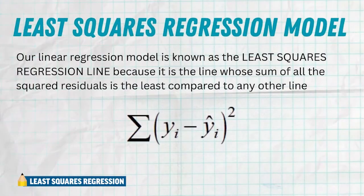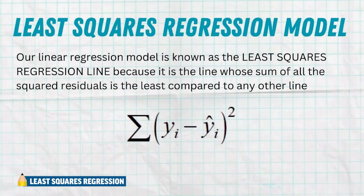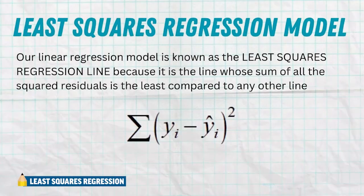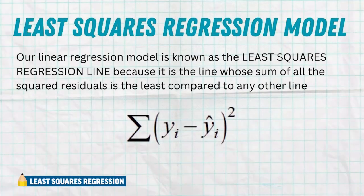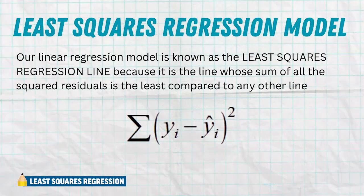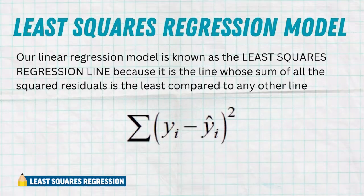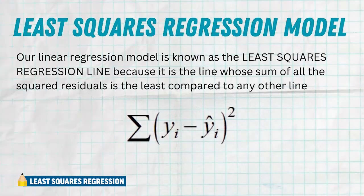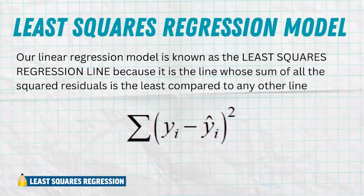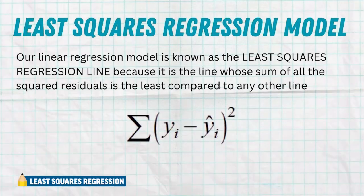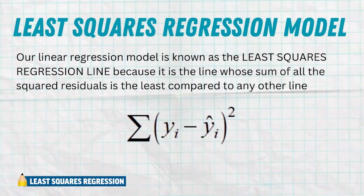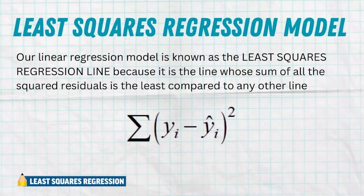In the formula, we see sigma — that's our mathematical symbol for the sum — and we see any individual residual, which is y minus y-hat, squared. If we sum up all of the squared residual values, we want that sum of the residuals squared to be the smallest compared to any other line.